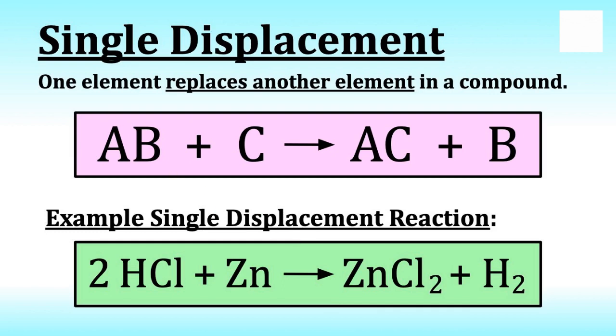So single displacement, one element replaces, sometimes we call this single replacement. I like that better. We have a compound AB and an element, another element replaces another element, usually the metal. So B gets kicked out. And then we have AC and B. Here we have compound HCl, hydrochloric acid. And then we have the metal zinc.